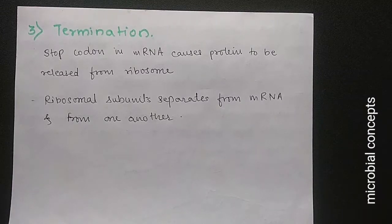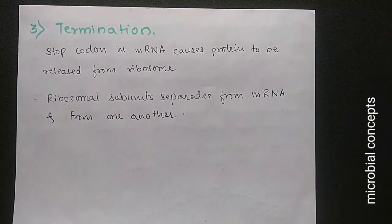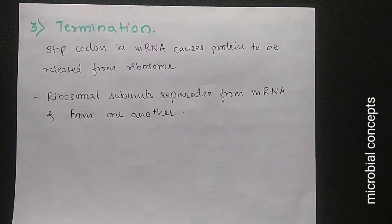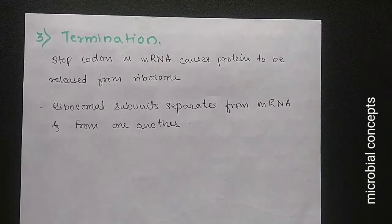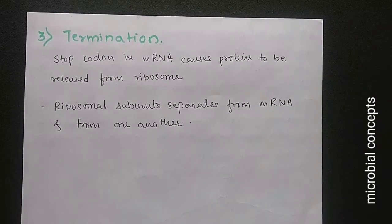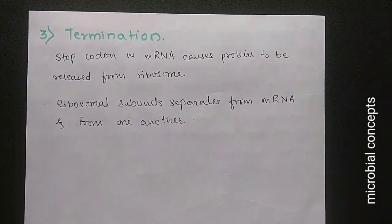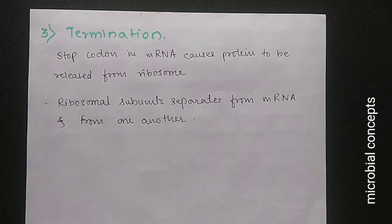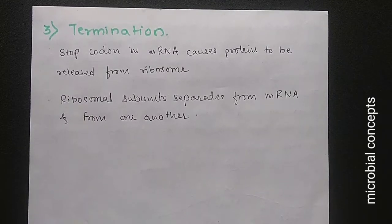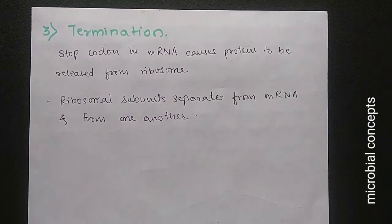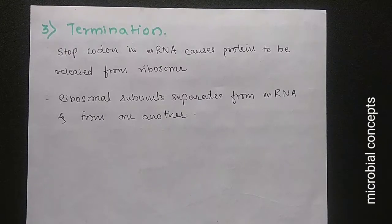Termination occurs when a stop codon in the mRNA causes the protein to be released from the ribosome. The three stop codons are UAA (ochre), UAG (amber), and UGA (opal). These stop codons terminate translation; the peptide is set free, the ribosomal subunits separate from the mRNA and from each other, completing the synthesis of the protein.